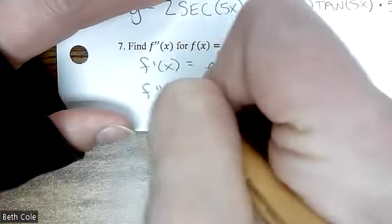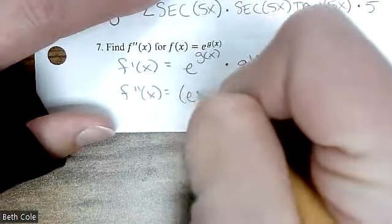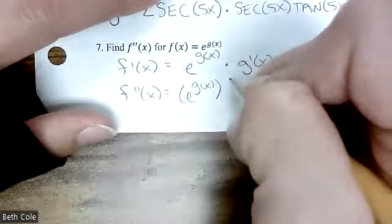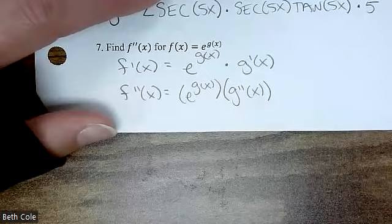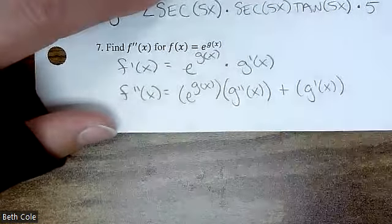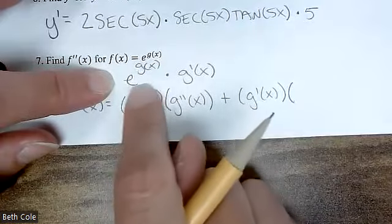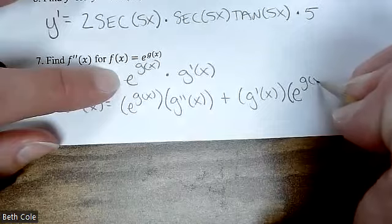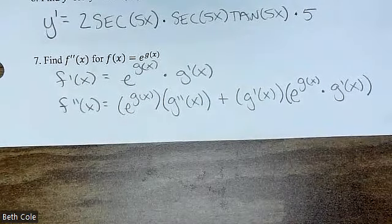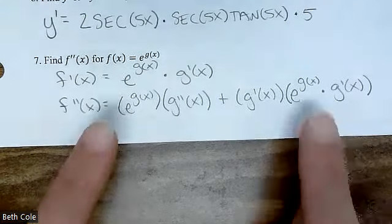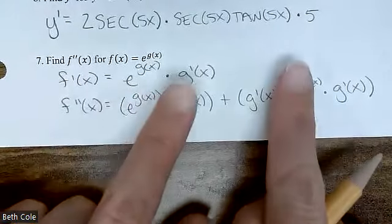So when you go to do the second derivative, what rule are you working with? Product rule. So it is the first thing times the derivative of the second — the derivative of G prime is G prime prime, G double prime — plus the second thing times the derivative of the first. When you do the derivative of e to the power G of X, it is e to the power G of X times G prime of X. Now, both of these have an e to the power G of X, so if they both have it, you can factor it out.